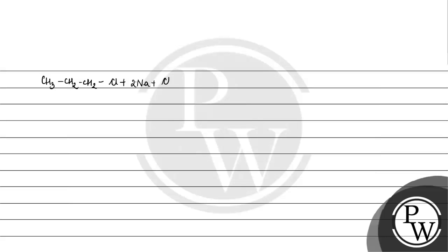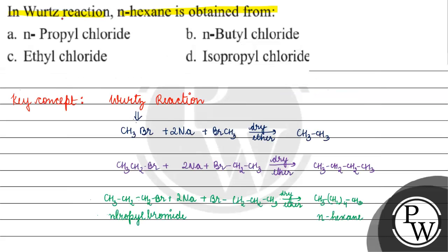So if chloride will be there, we will have formation of N-hexane, right? N-hexane will form. This is N-propyl chloride in the presence of dry ether. Coming back to the question, the correct answer for this question will be option A. I hope you understood it well, thank you and all the best.